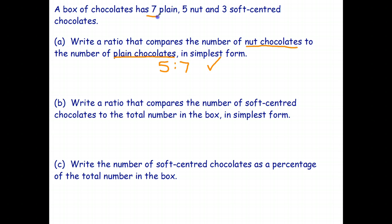Well, the total number is seven plus five plus three, which adds to 15. So, soft-centered is three, total number is 15, and I can simplify that by dividing by three. Dividing by three, and I get one is to five.